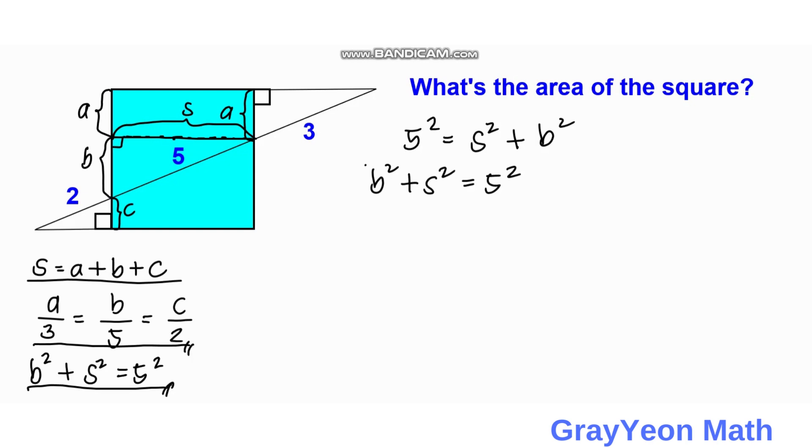Okay, so now that we got this relationship by Pythagorean theorem between the length B and the length S, then it is best that we use again the equation S is equal to A plus B plus C. But we need to express A in terms of B and C in terms of B. So by doing that, we can say that from the previous ratio we got, we have A over three is equal to B over five, or A is equal to three-fifths times B.